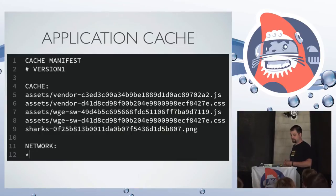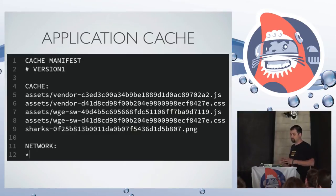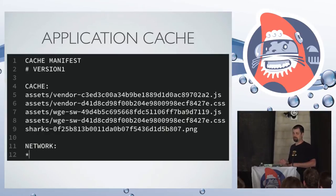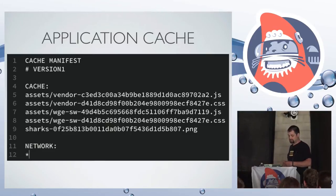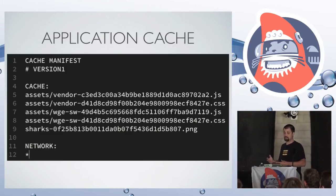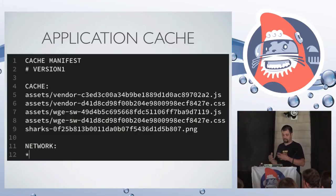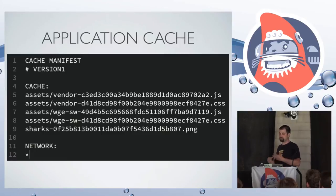The first thing we need for an offline web app is a way to store our app offline, and one of the ways we can do this is by using application cache. To use application cache, you create a manifest file that lists all the resources you need for your app to work offline — think your JS, your CSS, any images. All the resources you declare are always pulled out of the cache whether you're online or offline.